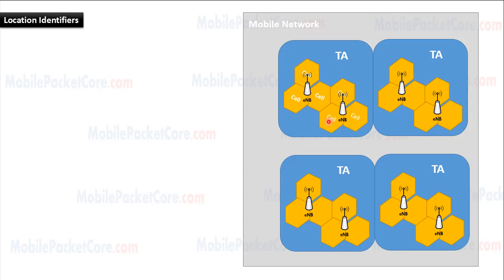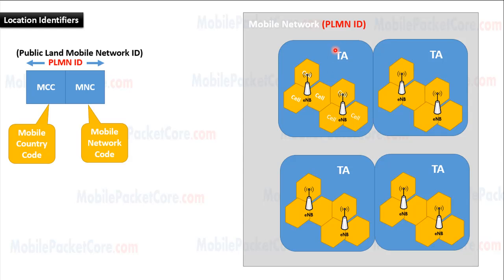Every element has its own identifier. The mobile network is identified by an identifier called PLMN ID. PLMN refers to Public Land Mobile Network. The PLMN ID consists of two parts: the MCC and the MNC. MCC refers to Mobile Country Code, and it is a unique ID for every country. MNC refers to Mobile Network Code, which is a unique ID for every network inside the country.